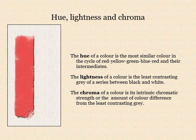The lightness of a colour is the least contrasting grey of a series between black and white — in this case a middle grey. The chroma of a colour is the intrinsic chromatic strength, or the amount of colour difference from the least contrasting grey, in this case a high strength for physical paint.